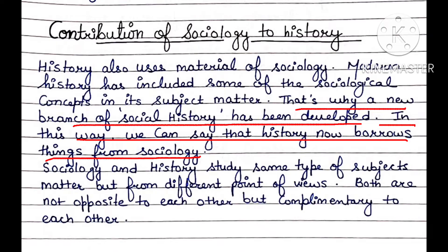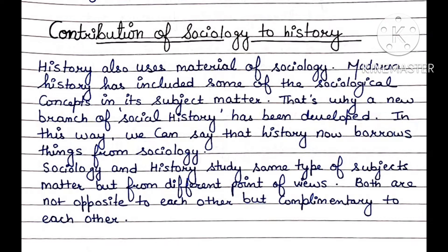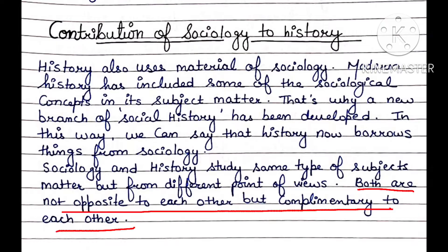In this way, we can say that sociology and history both study the same type of subject matter but from different points of view. Both study human society, but history focuses more on the past while sociology focuses more on the present. Both are not opposite to each other but complementary to each other — they help each other to further explain things.